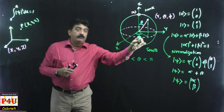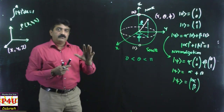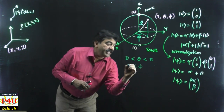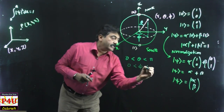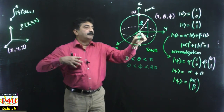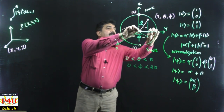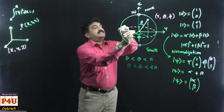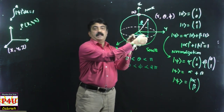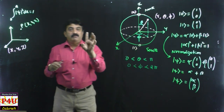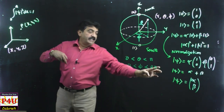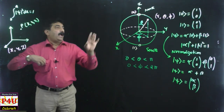What about phi? Phi can take values from 0 to 2 pi. The projection can rotate in a full circle. When it rotates completely, the angle will be 360 degrees. So theta takes values from 0 to pi and phi takes values from 0 to 2 pi.